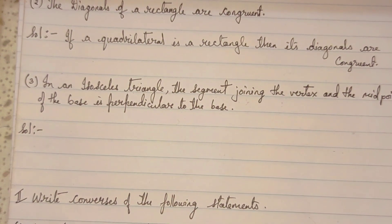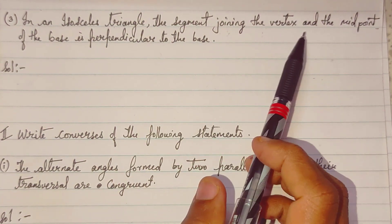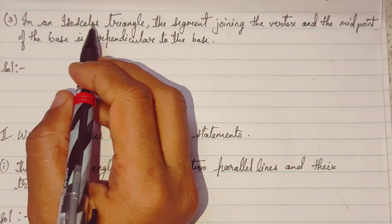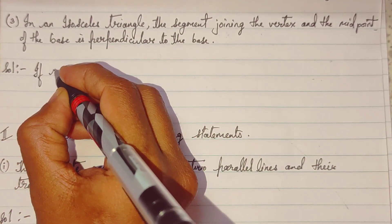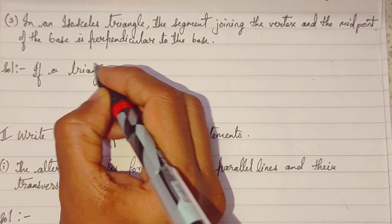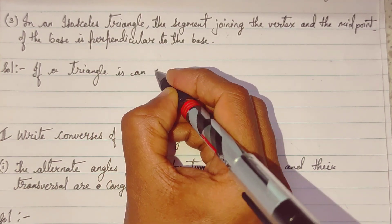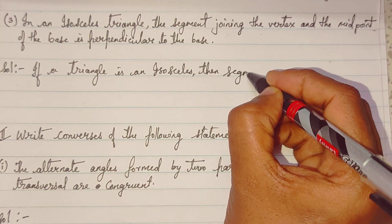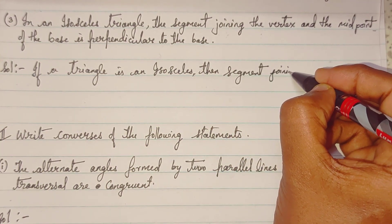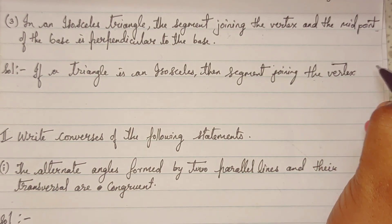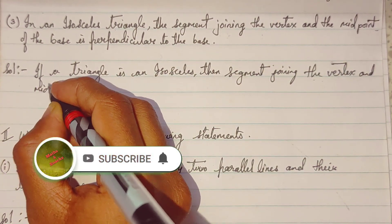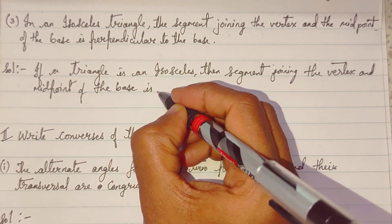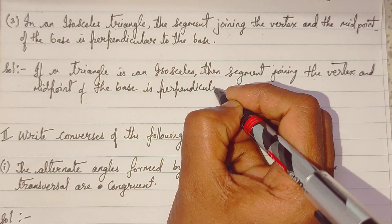Third one: 'In an isosceles triangle, the segment joining the vertex and the midpoint of the base is perpendicular to the base.' Here they are talking about an isosceles triangle. So in if-then form: if a triangle is isosceles, then the segment joining the vertex and the midpoint of the base is perpendicular to the base.